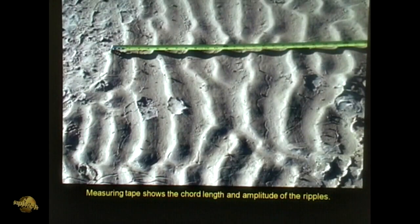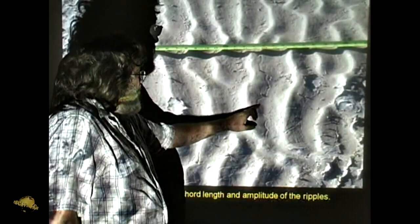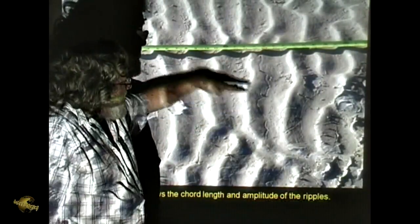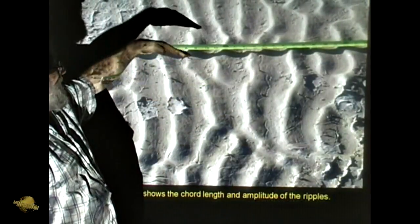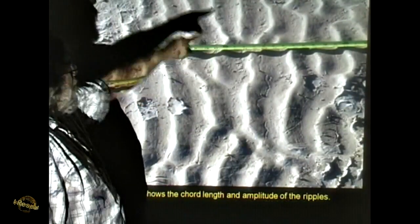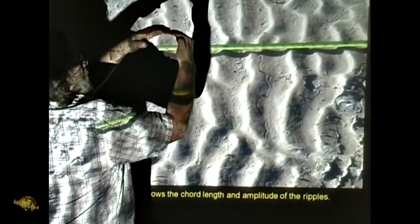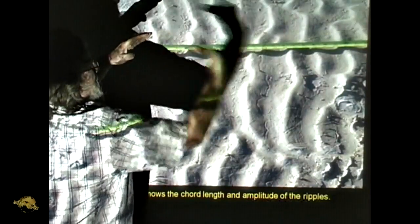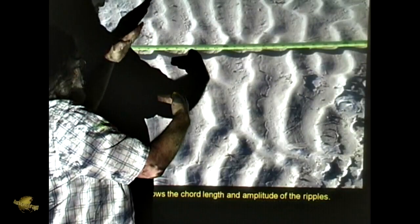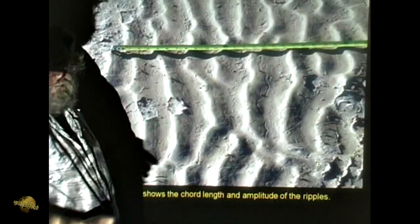Can you tell the direction of flow by looking at the ripples? Yes, you can. In order to tell this, you have to look at it from the cross section. The up-current side has a shallower gradient than the down-current side. If you look at these ripples in cross section, they're not symmetrical. The side pointing upstream is shallower, and the side pointing downstream is steeper. So that right there will tell you.